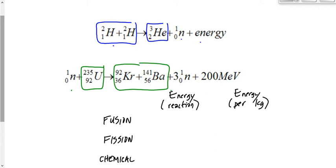Two columns in this table: the first is the energy of one reaction, and the second is the energy per kilogram. In the first case we're comparing raw reactions; in the second case we're comparing apples to apples — one kilogram of each. For the energy of a single reaction, fission produces the most and the chemical reaction produces the least, with fusion in the middle. But per kilogram, fusion ranks first and fission is in the middle. Fission and fusion swap places depending on how you ask the question.